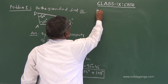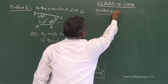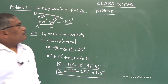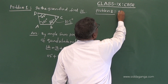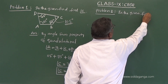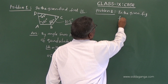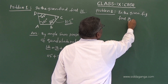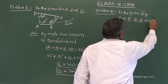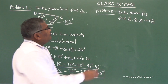Problem number 2: In the given figure, find angle A, angle B, angle C, and angle D. All four angles are to be found. The figure shows quadrilateral ABCD with angle values expressed in terms of x.